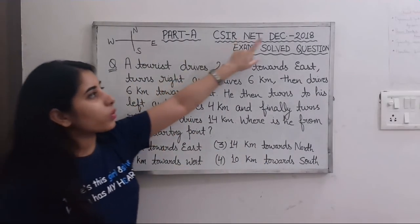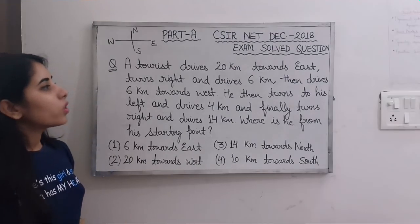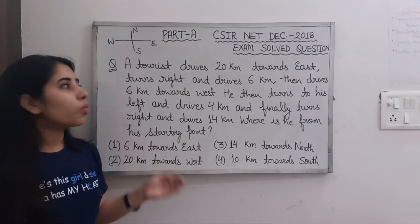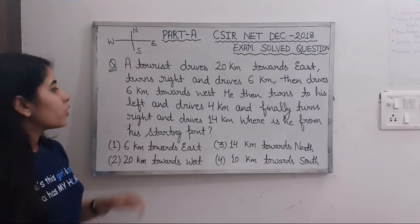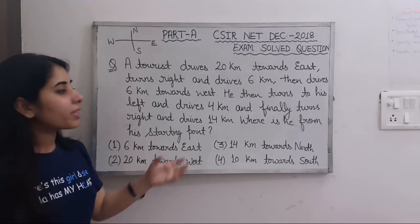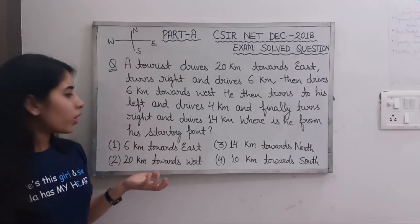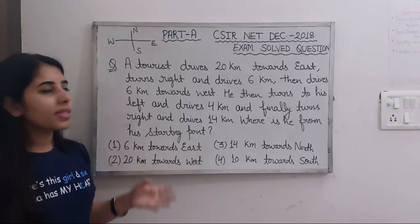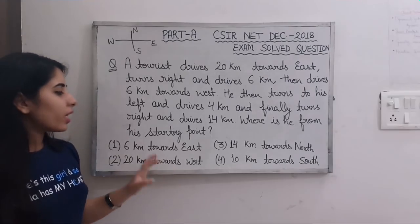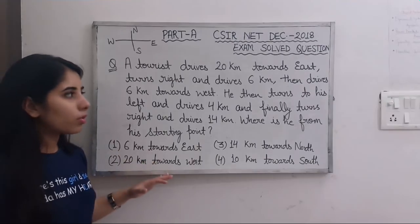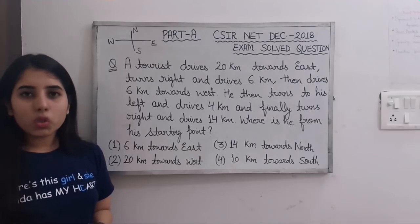This question has been asked in the December 2018 CSIR NET exam. A tourist drives 20 kilometers towards east, turns right and drives 6 kilometers, then drives 6 kilometers towards west. He then turns to his left and drives 4 kilometers, and finally turns right and drives 14 kilometers. Where is he from his starting point?